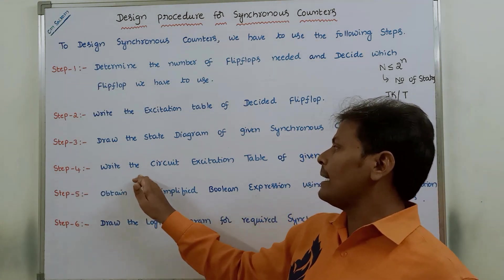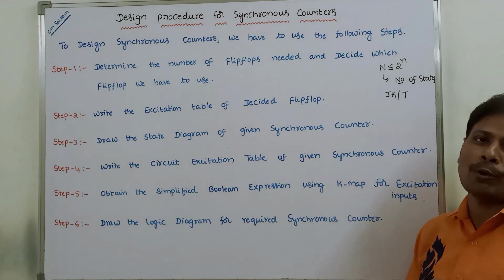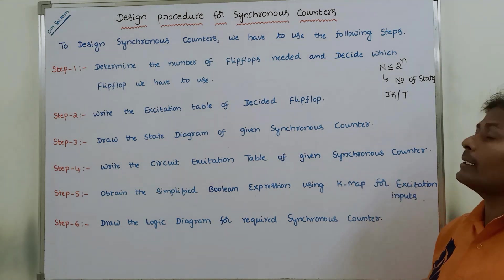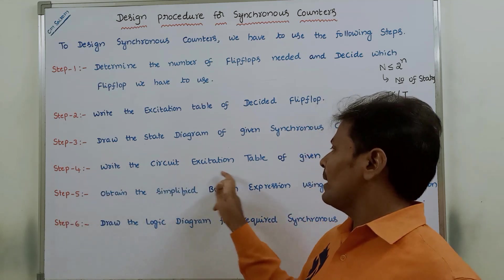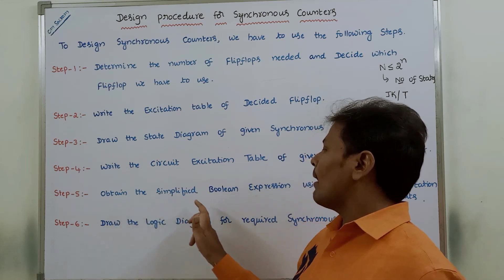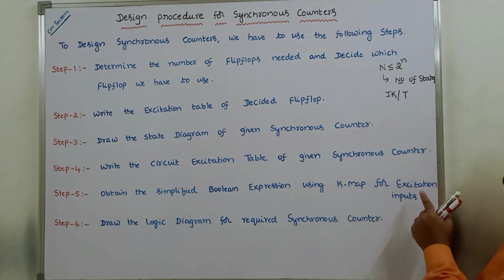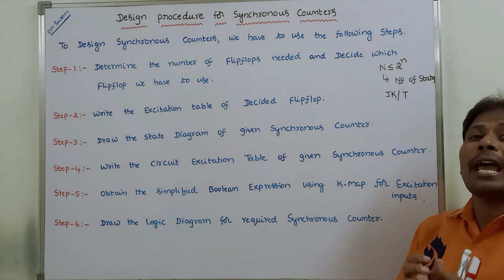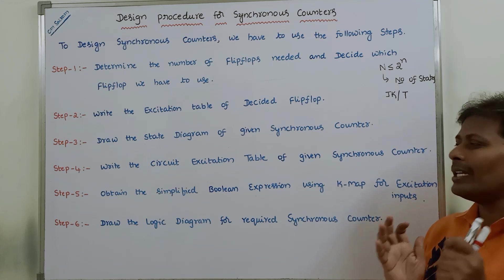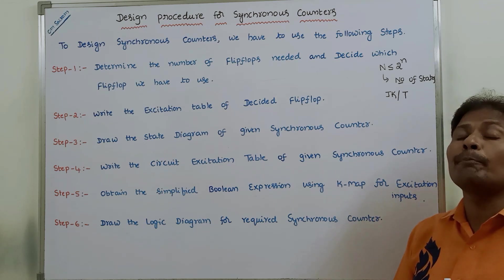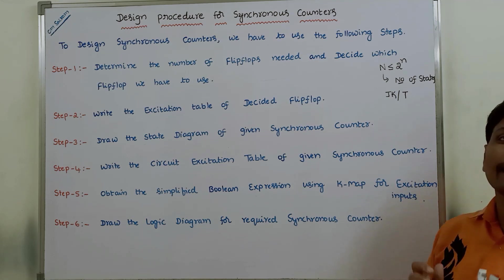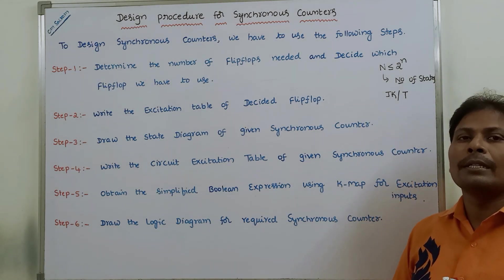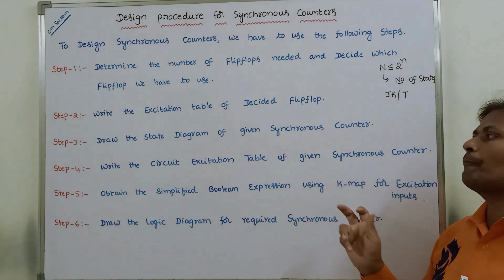Step 4: write the circuit excitation table of the given synchronous counter. Step 5: obtain the simplified Boolean expression using a K-map for the excitation inputs. In the circuit excitation table, we find the excitation inputs and then derive their simplified Boolean expressions using a K-map. These two steps will be explained through an example in the next video.